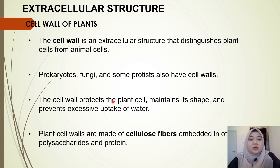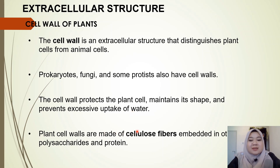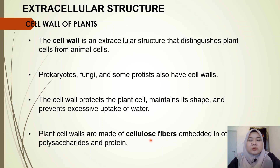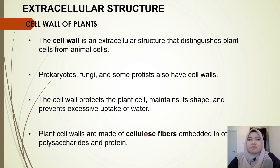The functions of the cell wall in plants are: first, to protect the plant cells; second, to maintain its shape; and third, to prevent excessive uptake of water. Plant cell walls are made of the main component called cellulose fibers, which are embedded in other polysaccharides and proteins. Cellulose is a structural polysaccharide made up of repeating glucose monomers.